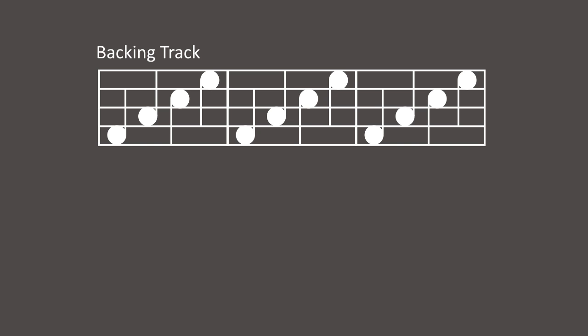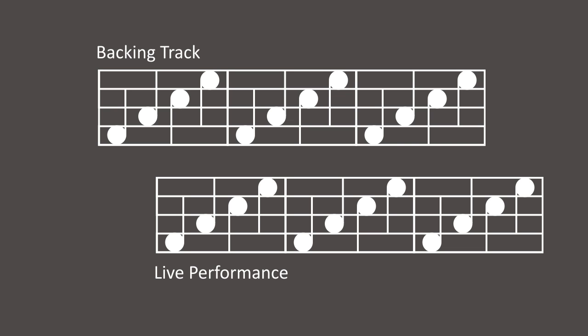So a backing track helps, but it's not ideal. Why? Because all of the remote musicians in the session are still playing when they hear the beat of the backing track, which is delayed slightly compared to when the backing track actually plays — much like the example of the drummer earlier. So then what's a better way?